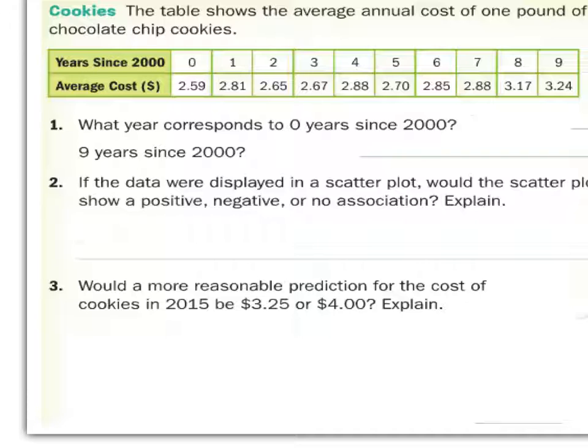In the year 2015, which one would be a more reasonable prediction? Would you expect it to be $3.25 or $4? Probably $4. Here's the reason why. In year 2009, it's already at about $3.25. So, you're expecting it to go up because of the positive association. Eventually, it should be up to $4.